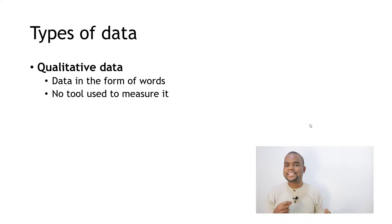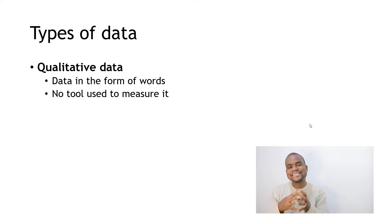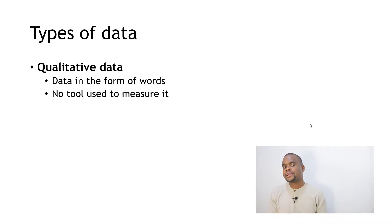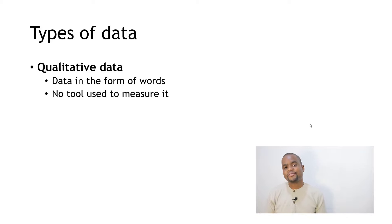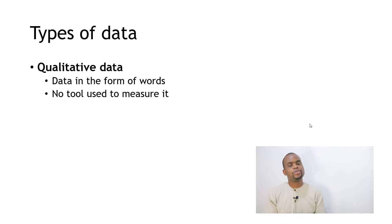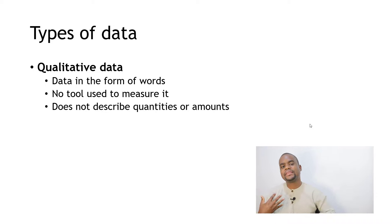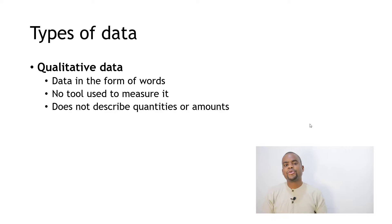In qualitative data, we usually don't have a specific objective tool to measure the values. For example, if you ask 'Are you married or not?' there's no measurement tool to objectively measure that. Or if you ask about level of satisfaction with a course, you don't have an objective scale to measure that. So in qualitative data we're mostly not describing things in quantities — we have groups, names of things, or levels of things.